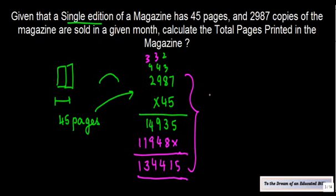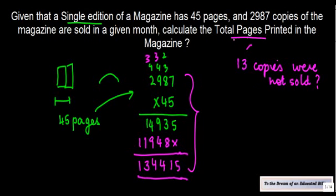But can I complicate it a little further? If I tell you that 2,987 copies of the magazine were sold and, by the way, 13 copies were not sold, then can you tell me what is the total pages printed in the magazine?